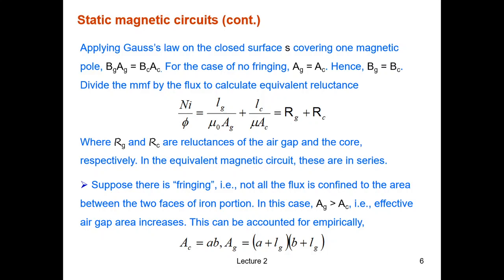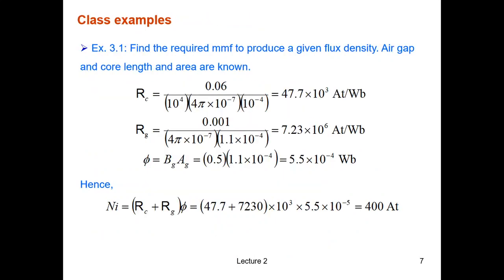It's either the air gap area equals (A + Lg) multiplied by (B + Lg), as you can see here, where A and B is the dimension of a rectangular magnetic pole, or you can just use Ag is 1.1 times Ac.